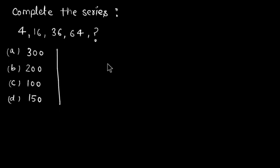Okay, let's see how we solve it. First, I'll write this series again: 4, 16, 36, 64, and the question mark. We have to find the number that appears in place of the question mark. The first thing is to find the logic in the series. You can see that